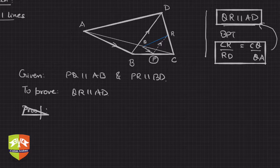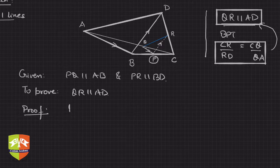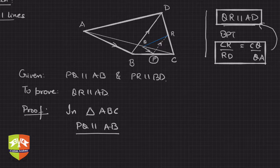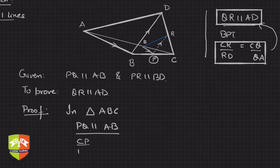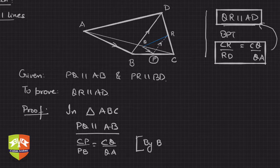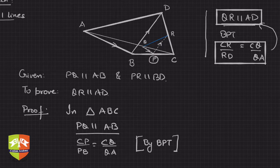In triangle ABC, PQ is parallel to the side AB. By BPT, we can write CP/PB = CQ/QA. This is equation number one.